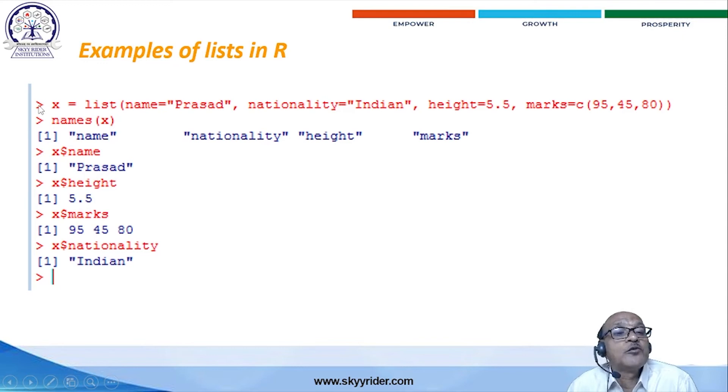How to type in R data. This is the prompt of path with an interpreter form. X is the variable. List, that is the command. Name is equal to Prasad. Nationality is equal to Indian. And ID is equal to 5.5. Marks is equal to - to create the vector - like 95, 45, 80.